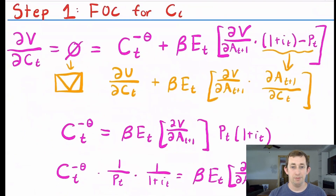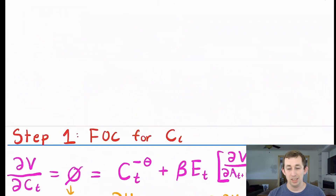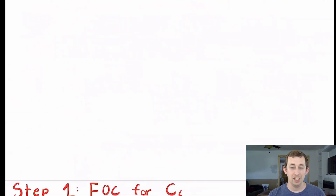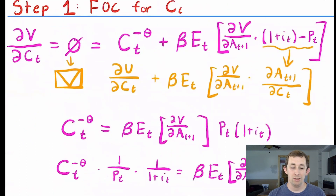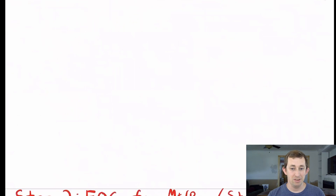Here's the first order condition for consumption. I'm going to take DV/DC_T, which equals zero by the envelope theorem. That equals DU/DC_T — today's marginal utility with respect to consumption — plus beta times the expected value of DV/DA_{t+1} times DA_{t+1}/DC_T. I'm doing a chain rule here. From the budget constraint, DA_{t+1}/DC_T is negative P_T times (1 + I_T). We can use the fact that this equals zero to rearrange and get how C_T relates to beta times E_T [DV/DA_{t+1}].